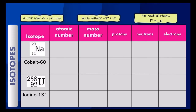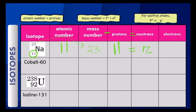Let's try a few more examples. Here we have the element sodium, Na, atomic number 11. The number at the bottom is the atomic number or number of protons, so we fill in 11 protons. The number at the top represents the mass number, which is 23. To find the neutrons, subtract the mass number minus the protons: 23 minus 11 gives you 12 neutrons. There is no charge on the sodium isotope, so the number of protons equals the number of electrons — 11 protons means 11 electrons.